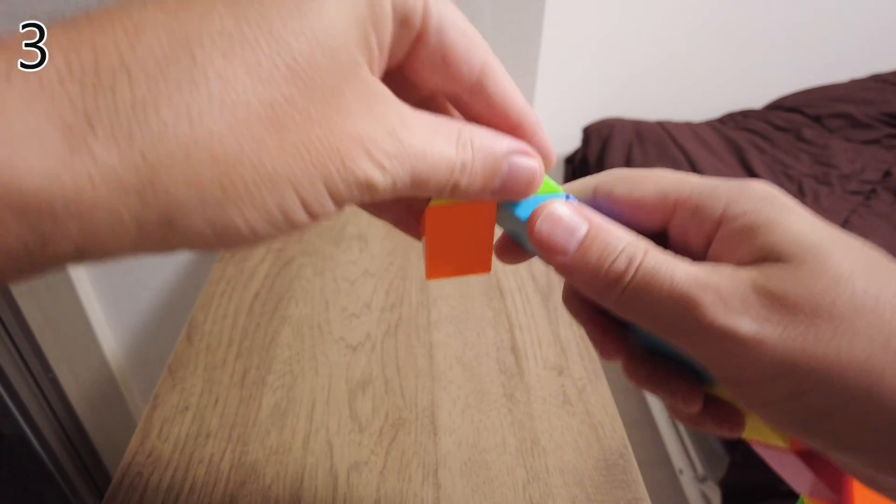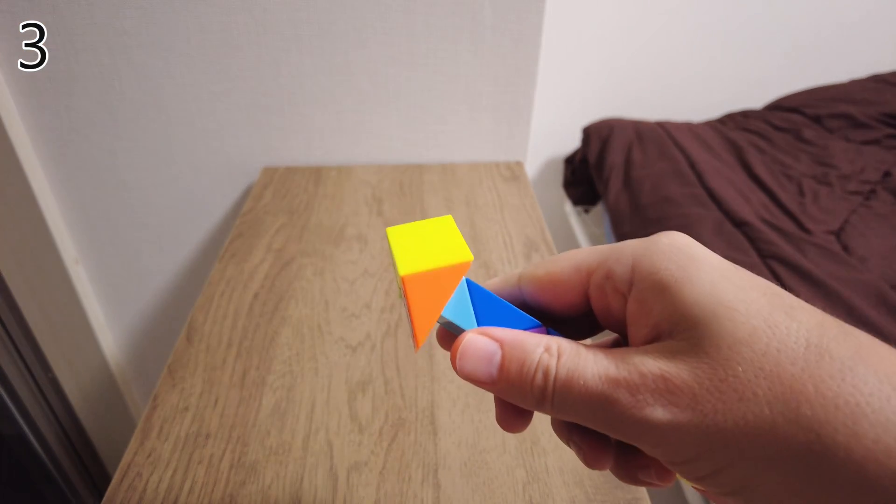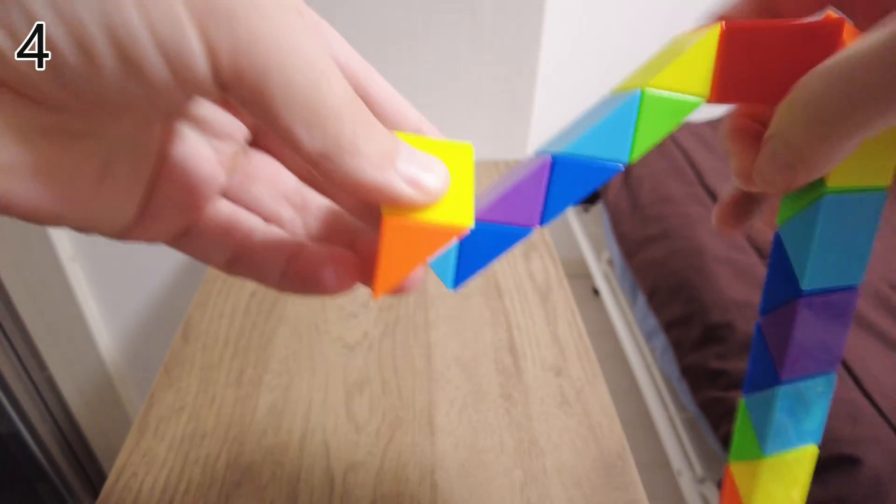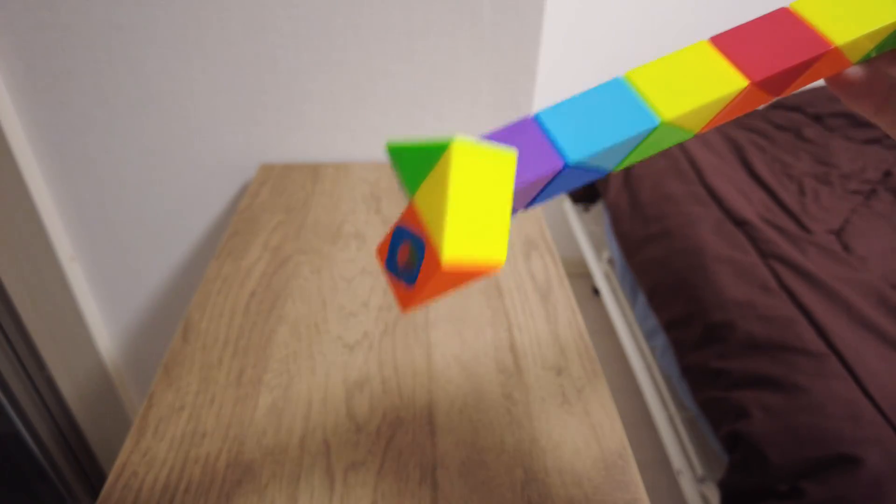Now at this join, bend it up one. This join, two clicks away from you. One, two. So you've got that.